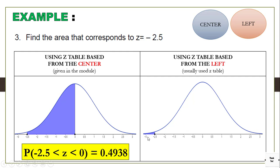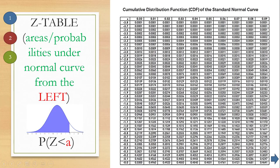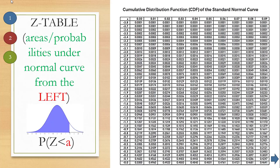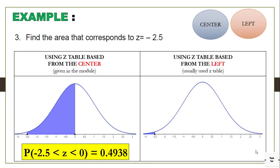Using the Z-Table based from the left for Z equal to negative 2.5: since this table has negative values, we go directly to negative 2.5, with no second decimal so we use 0.0. The intersection gives us 0.0062. That is the area using the Z-Table based on the left, which is a smaller area as expected.